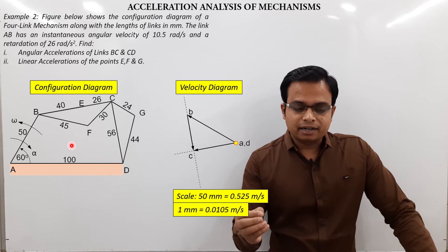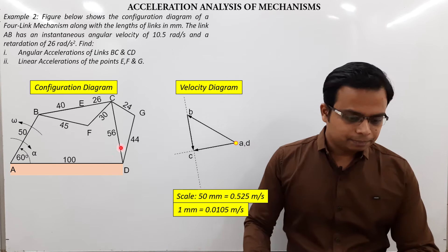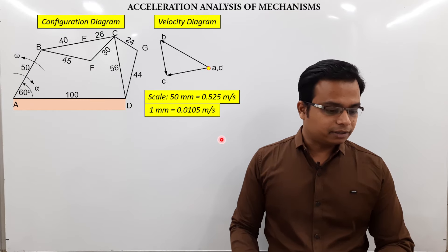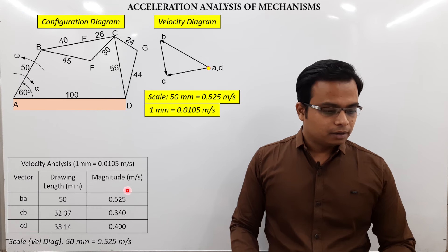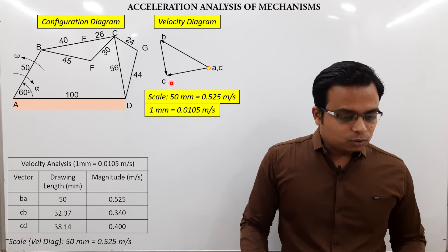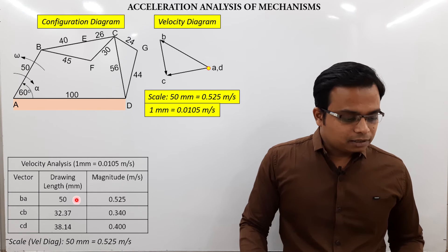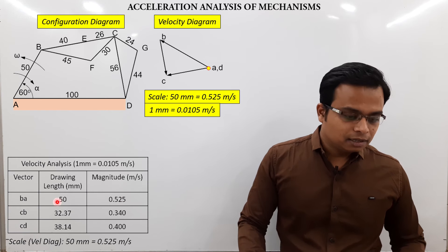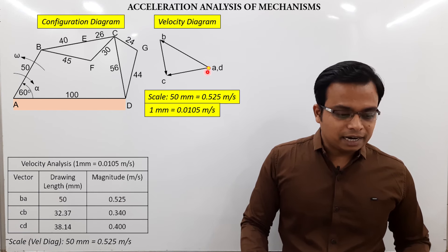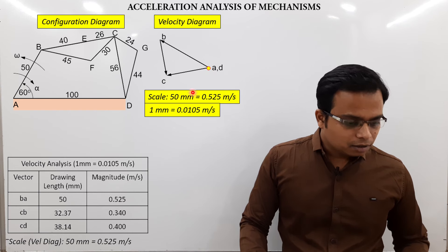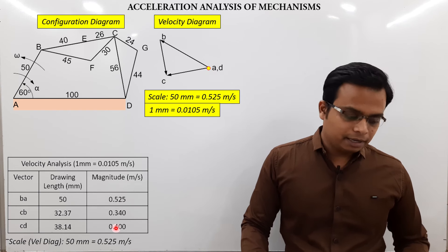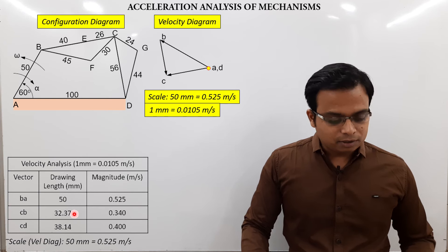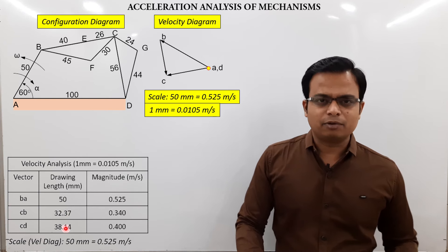With the velocity diagram done, we can now make the acceleration diagram. First, we create a table. The length VBA is 0.525 m/s = 50 mm. Measuring from the velocity diagram, VCD is 32.3 mm and VCB is 38.14 mm. These values were extracted from AutoCAD — when you do it manually on a drawing sheet, you may get values like 33 or 39–40 mm, which is acceptable.